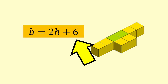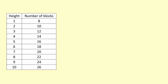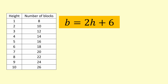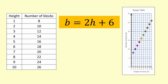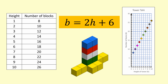The 6 in the formula represents the extra 6 blocks we have on the bottom layer. Now we can represent the relationship as a table, an equation, or a graph. This video covered using a table, equation, and a graph to represent the relationship between the height of a tower and the number of blocks used in its construction.